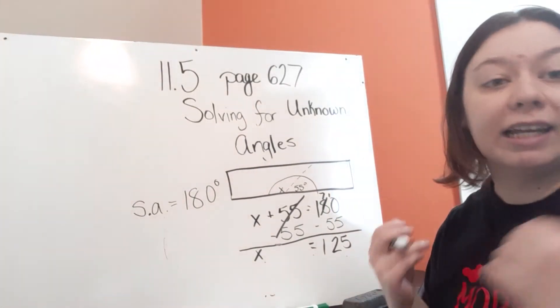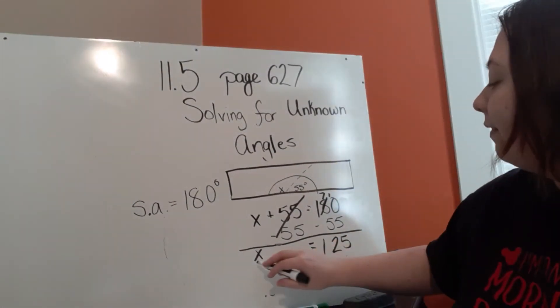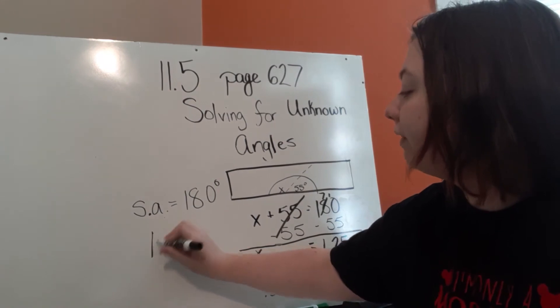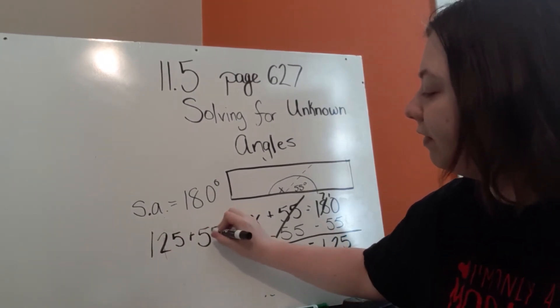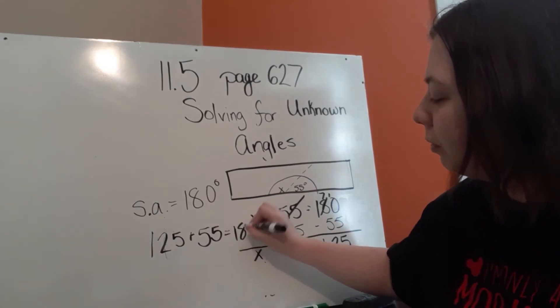Again, how can I check it? Now I'm going to plug it in. If X equals 125, that means 125 plus 55 should equal 180.